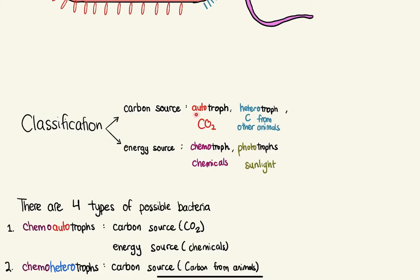For carbon source, if it's an autotroph, it's using carbon dioxide as its carbon source. If it's a heterotroph, it just means that it's getting its carbon from another animal. It's consuming something to get its carbon.